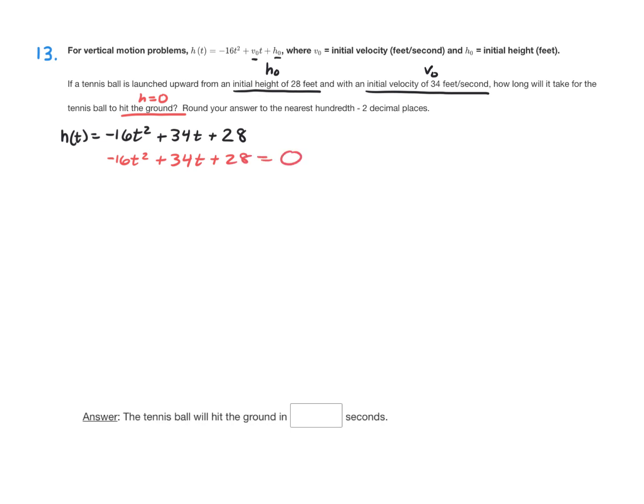And now we'll solve this using the quadratic formula, which is x equals negative b plus or minus the square root of the discriminant all over 2a. Let's go ahead and find the discriminant first. Here, the a value is negative 16, b is 34, and c is 28.